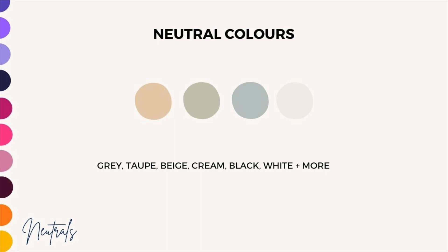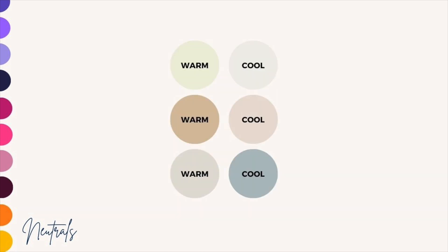Neutral colours are sometimes not even considered colours, but they are colours and they do have undertones of different temperatures depending on what colours they are. For example, we can have warm and cool greys, and warm and cool beiges. A cool beige will have a bit more blue in it and a warm beige will have more yellow in it. Understanding the undertones of our neutral colours is really helpful when we are putting together colour palettes and combinations for colouring our pages.